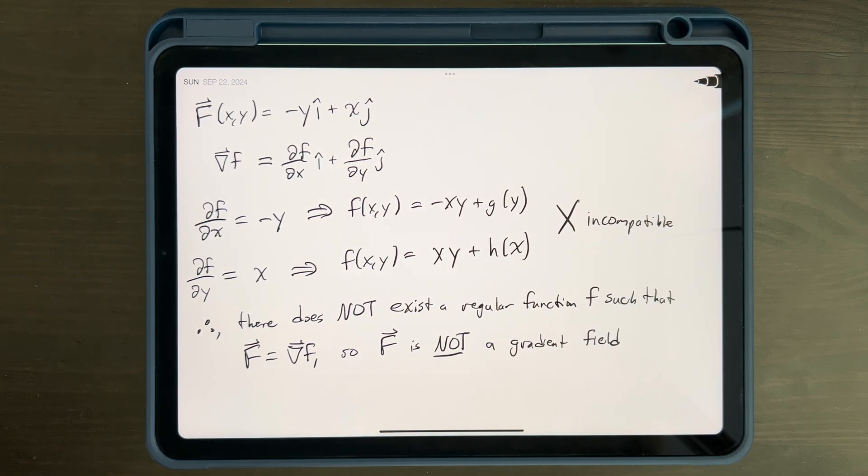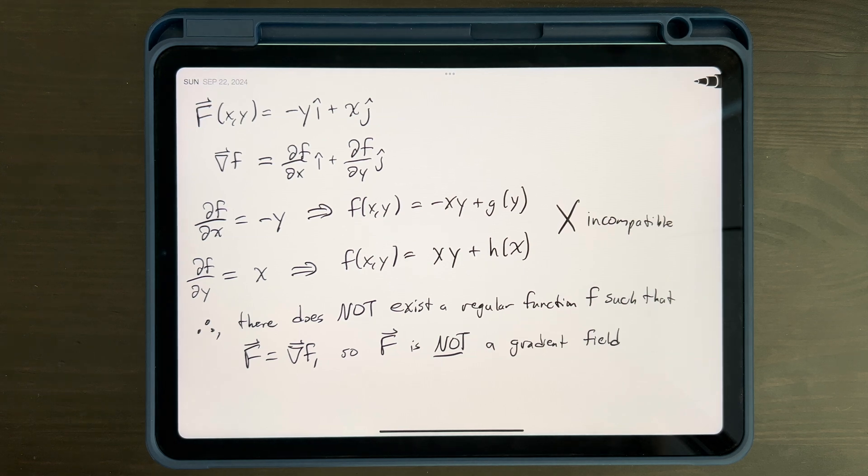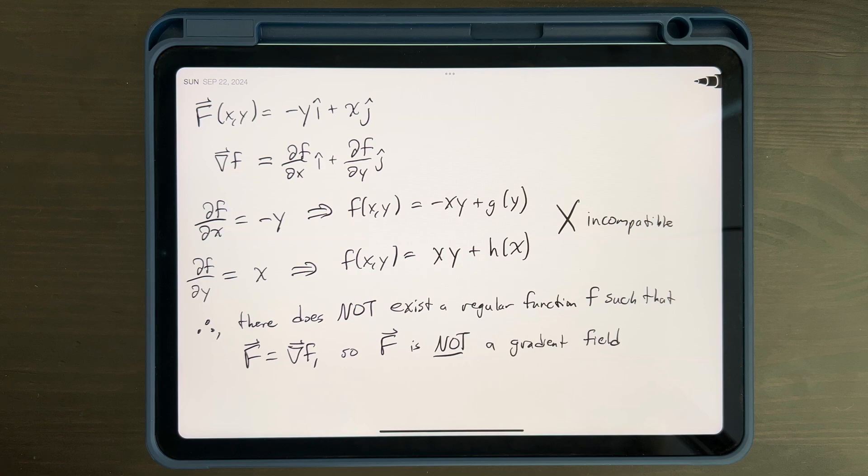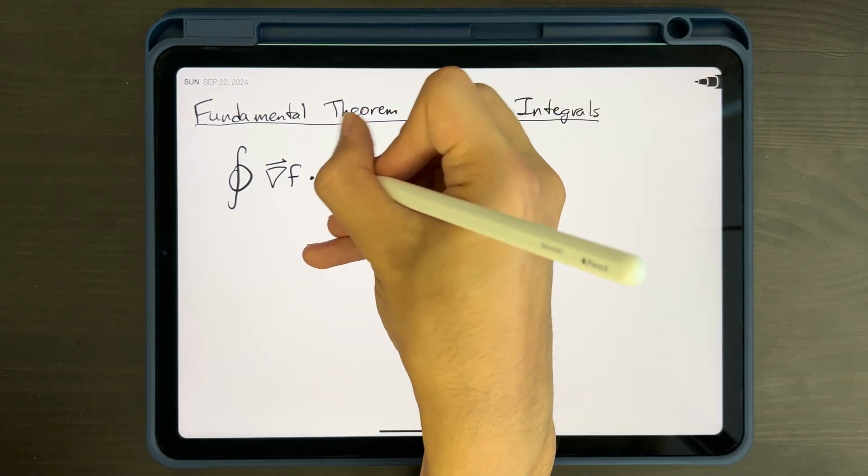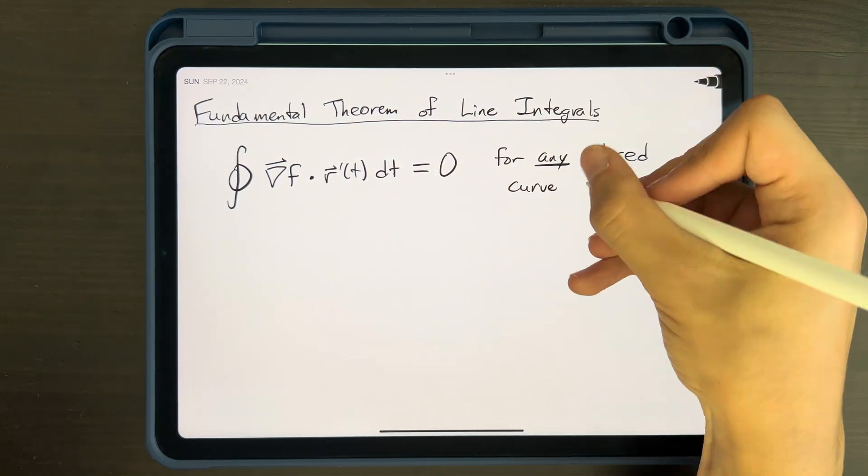One important note is that sometimes the line integral over a closed curve being zero may just be a coincidence. Just because that's the case for one closed curve over a vector field doesn't mean the vector field is conservative, because the theorem states that conservative vector fields have a line integral of zero over every closed curve.